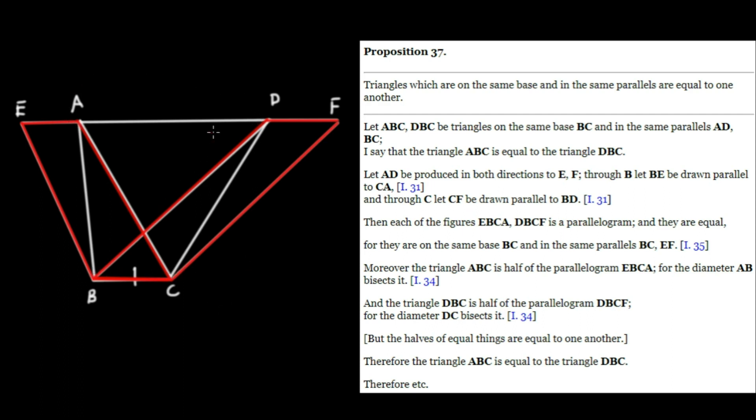Therefore, triangles which are on the same base, namely BC, and in the same parallels, in this case BC and EF, are equal to one another. Therefore, we have equality between our original two triangles, ABC and DBC.